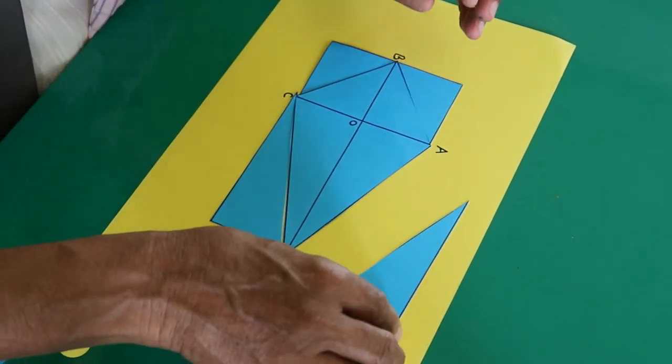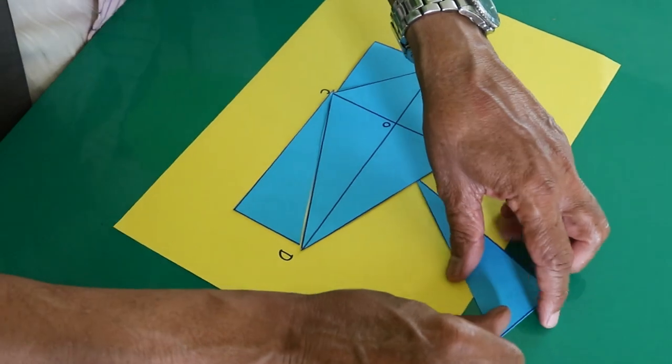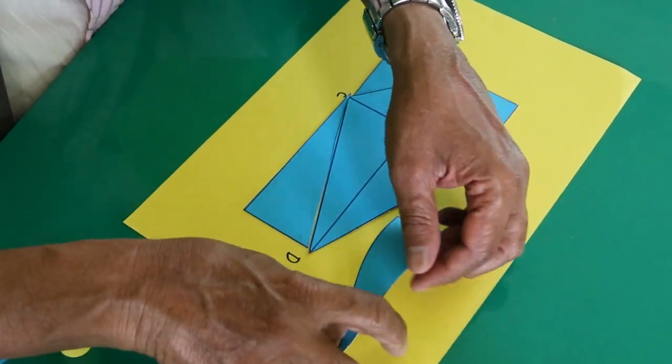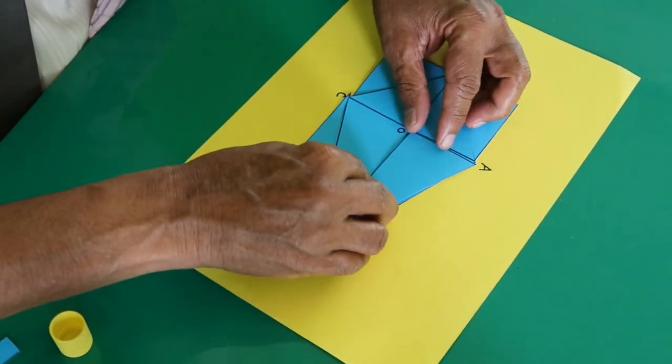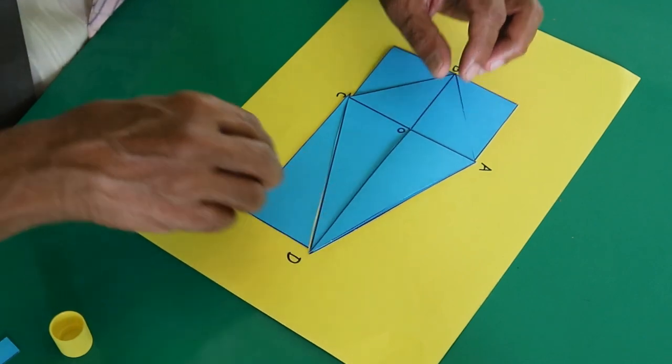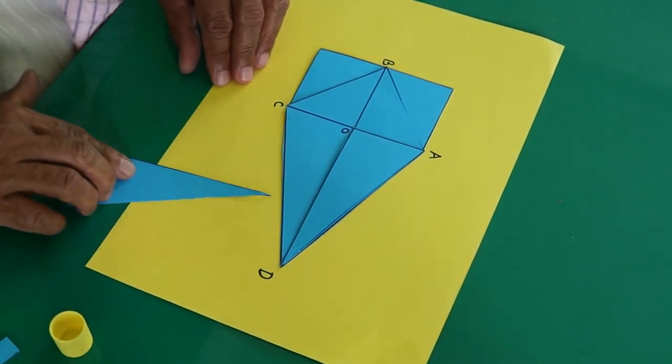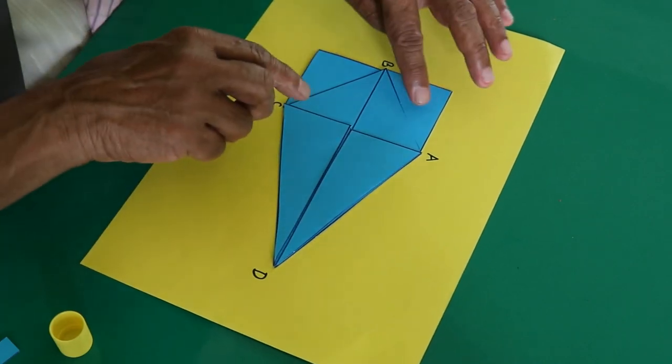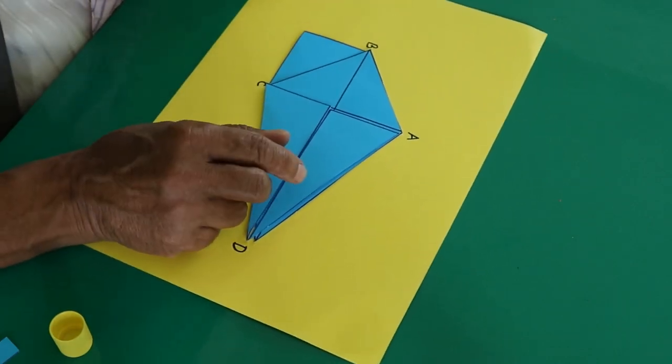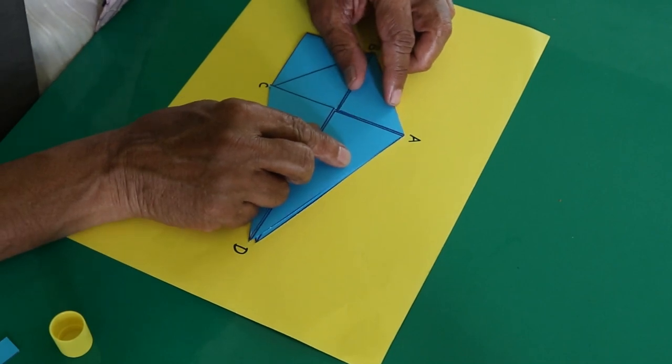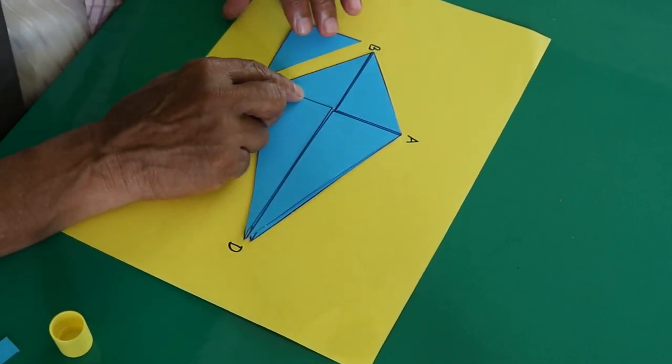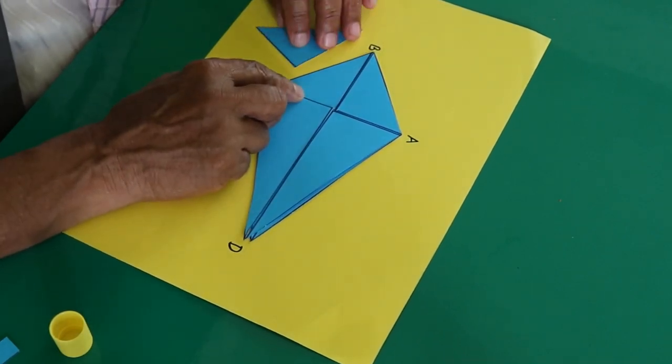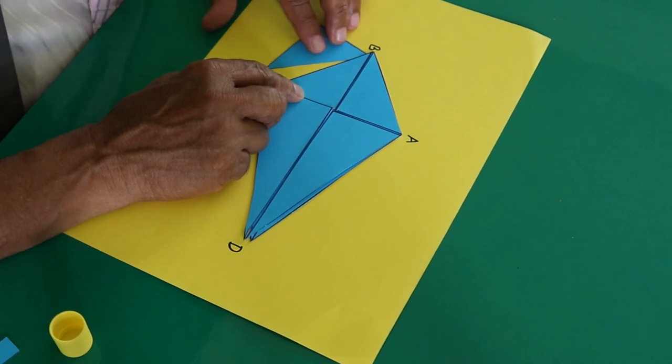Take out this piece and rotate it and arrange it over here. This piece also, you rotate this way and arrange it over here. Rotate this one and arrange it over here, and rotate this one and arrange it over here.